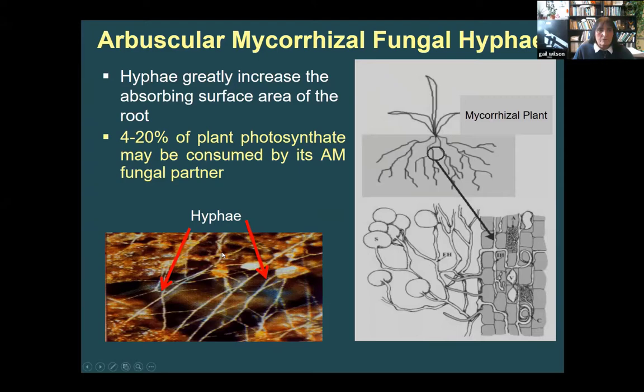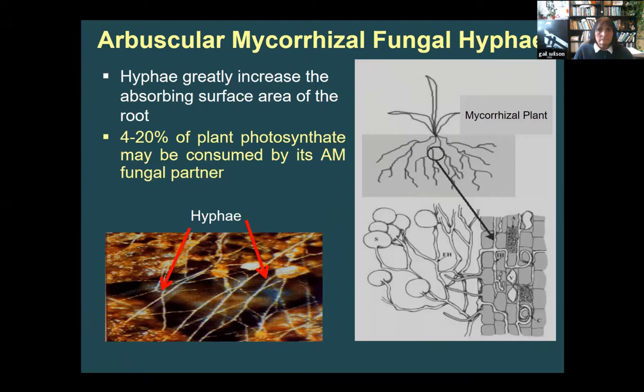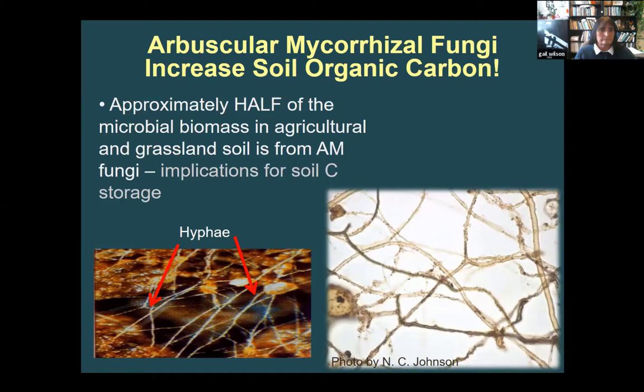In this photo, there's a lot of hyphae, especially in grassland soils. It's estimated that about half of the microbial biomass in agricultural or grassland soils comes from these fungi, which has implications for soil organic carbon storage. Not only is the biomass of all this fungal hyphae considerable, but the plant may increase its photosynthetic rate to help support these fungi below ground to support these symbiotic partners.